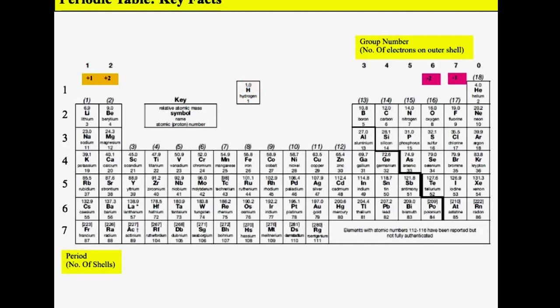At the top of the periodic table you can see numbers one through eight or zero. These are the group numbers. The group numbers tell you how many electrons are in the outermost shell. For example, boron is in group three, so it has three electrons in its outermost shell.